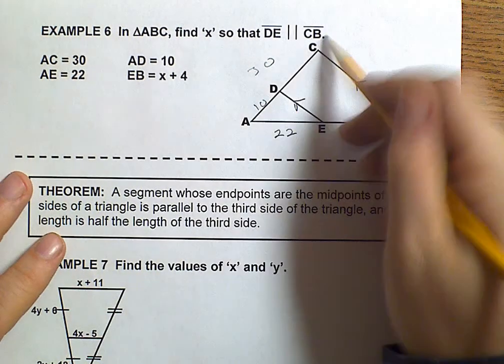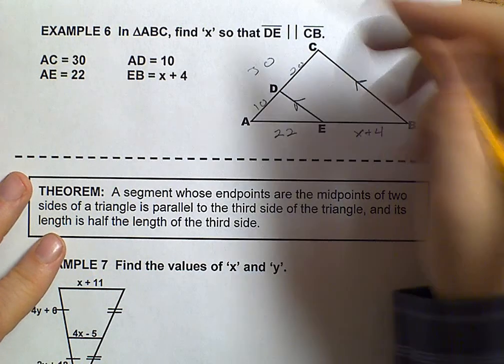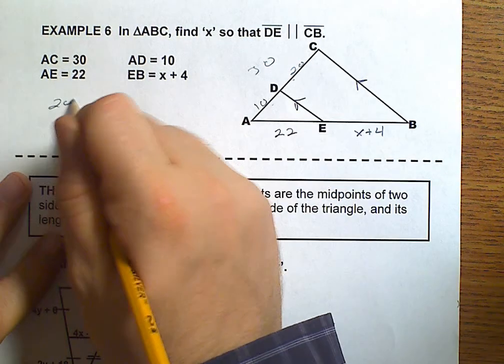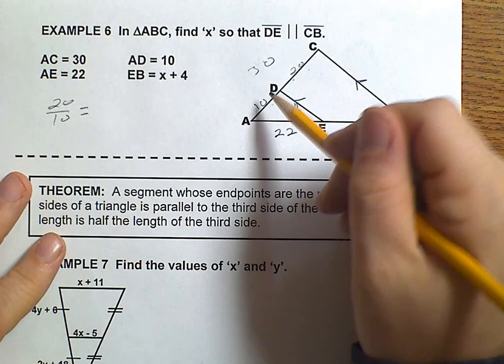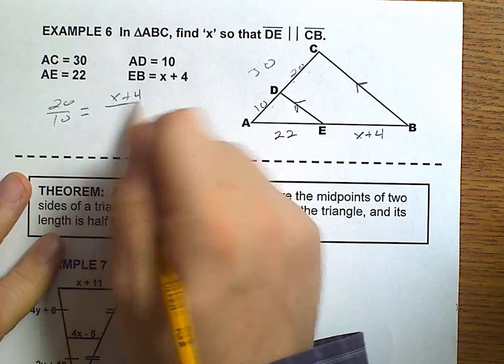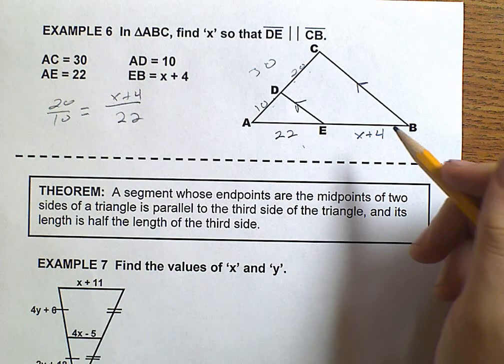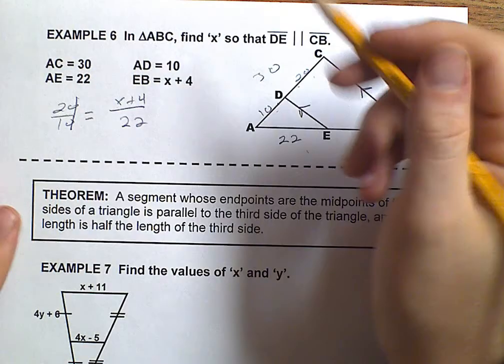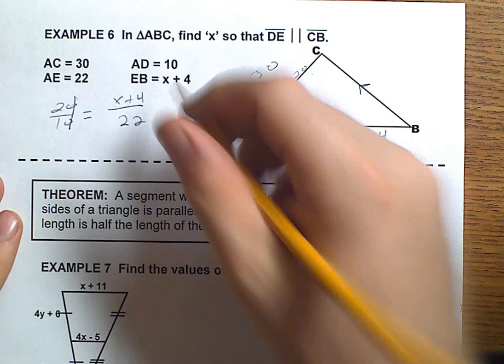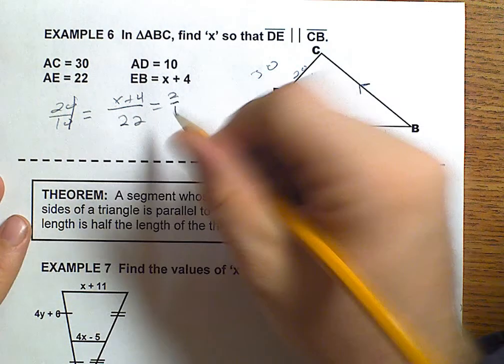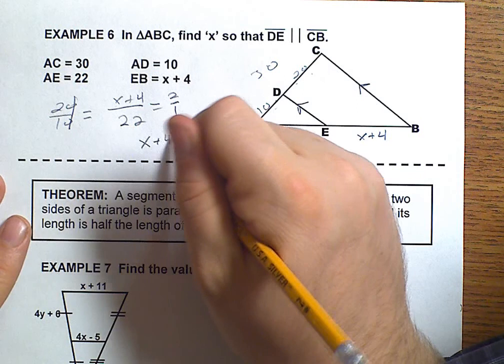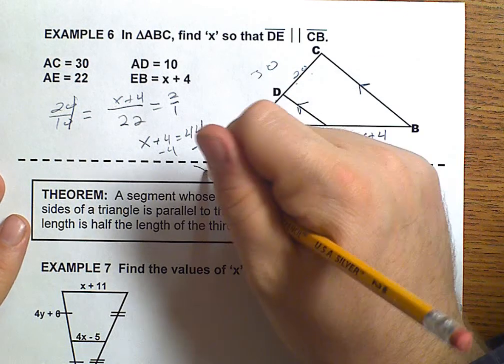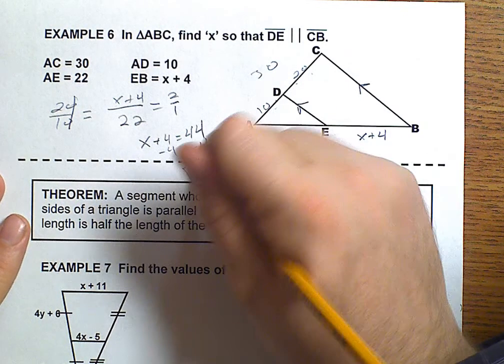Well, that means that this piece must be 20 because 30 minus 10 is 20. And so 20 over 10 must equal X plus 4 over 22. Now I can cross multiply and divide, but first I see that I can actually simplify this by dividing both those by 10. I get that this must equal 2 over 1. So now when I cross multiply, I get that X plus 4 must equal 44. When we subtract 4 from both sides, we get that X must equal 40.